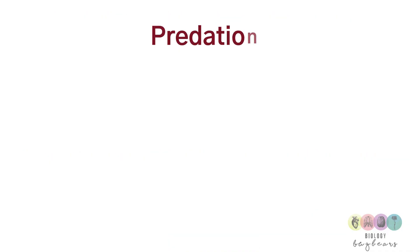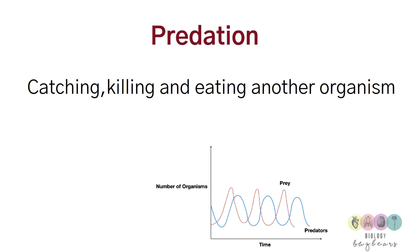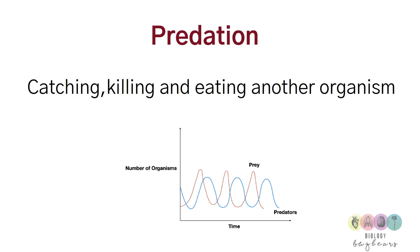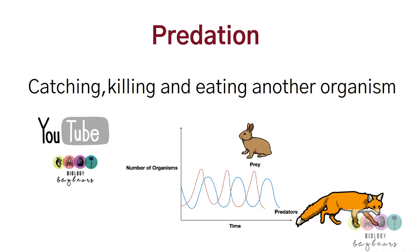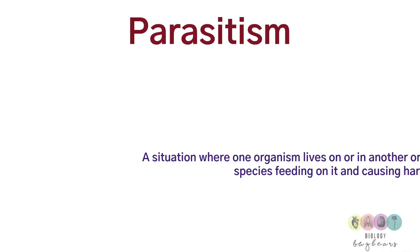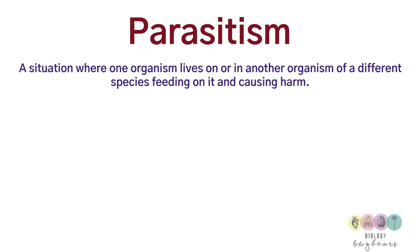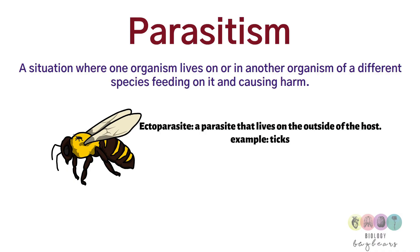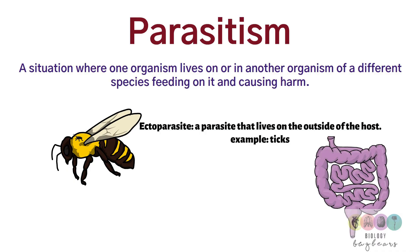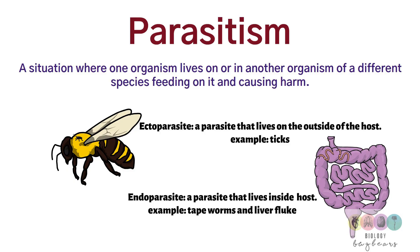Predation is defined as catching, killing, and eating another organism. Predation is hugely important and may appear on your exam — make sure you study the predator-prey graph, covered in a separate video. Parasitism is defined as a situation where one organism lives on or in another organism of a different species, feeding on it and causing harm. Different species is key. An ectoparasite lives outside the host and an endoparasite lives inside the host.